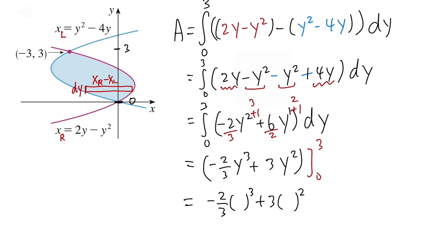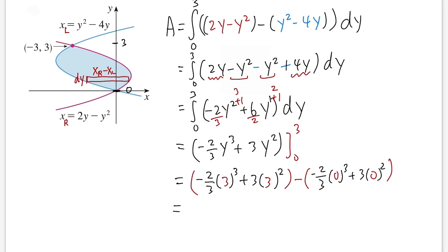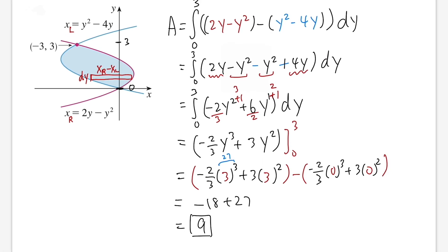Plug in the limits from 0 to 3. Plugging in 3: negative 2/3 times 3 to the third power plus 3 times 3 squared. Then subtract the result at 0, which is zero. Three to the third is 27; 27 times negative 2/3 cancels to give negative 18. Three squared is 9 times 3 equals positive 27. So we have negative 18 plus 27, which equals positive 9. The answer is 9.